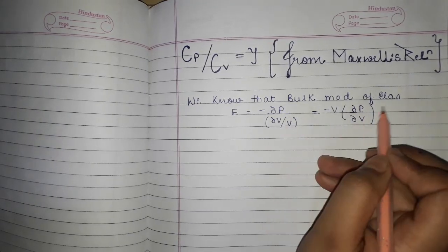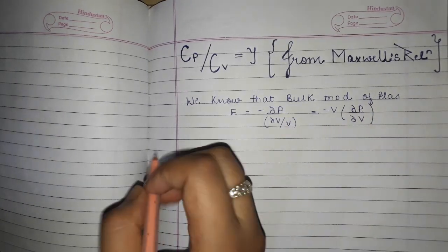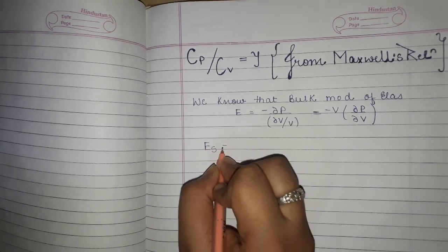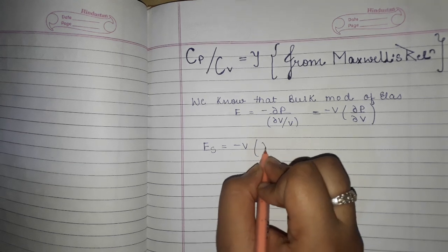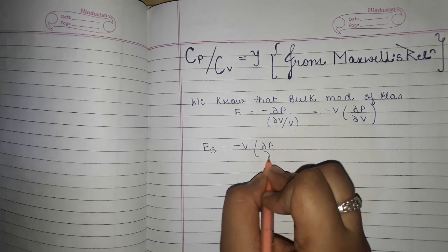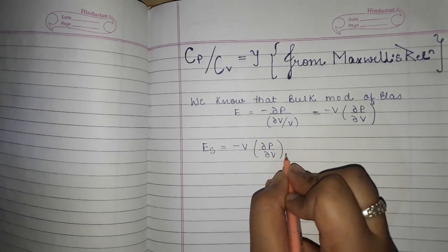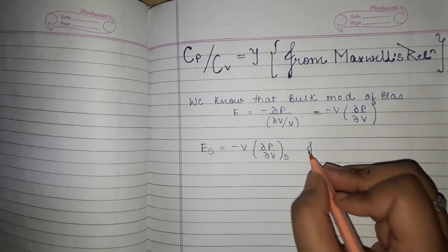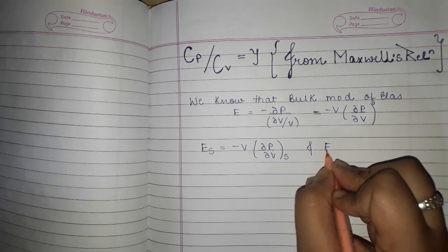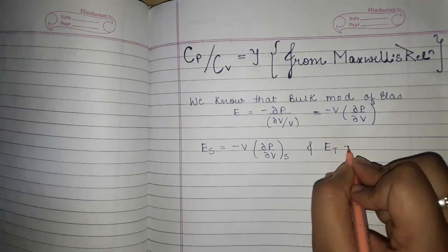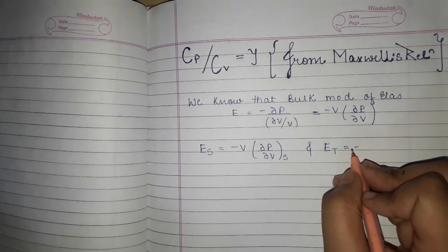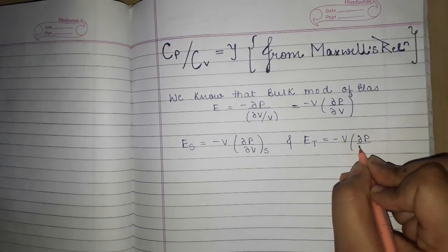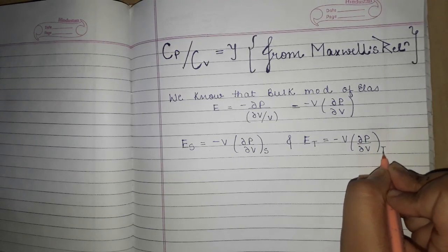Now if we take the bulk modulus of elasticity at constant entropy, that is ES, then ES equals minus V (dP/dV) at constant S. And if we take the bulk modulus at constant temperature, that is ET, then ET equals minus V (dP/dV) at constant T.